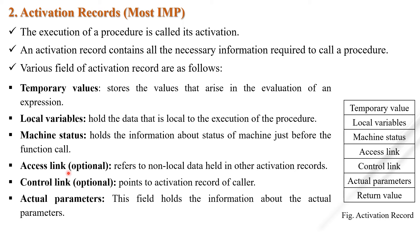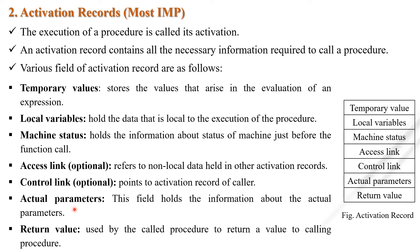The next field is access link, which is optional. It refers to non-local data in other activation records and is also called the static link field. The control link is also optional and points to the activation record of the calling procedure; this link is also called the dynamic link. The second-last field is actual parameter, which holds information about the actual parameters passed to call the procedures. The last field is return value, which is used to store the result of the function call.